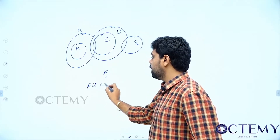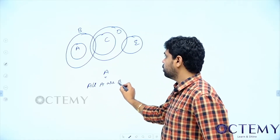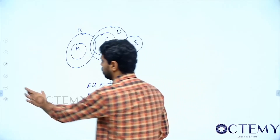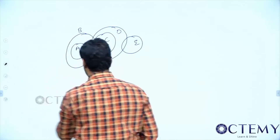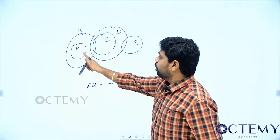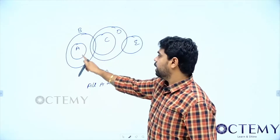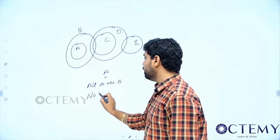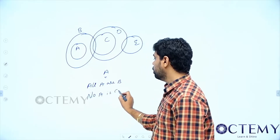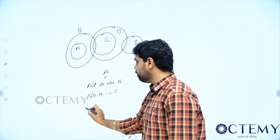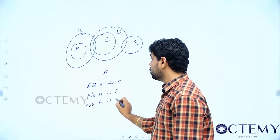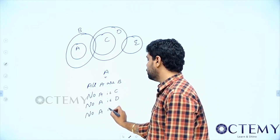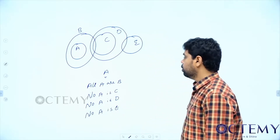From A to C: is there any link between A and C? We don't have any link, so no A is C. A and D also we don't have any link — no A is D. A and E also we don't have any relation — no A is E.